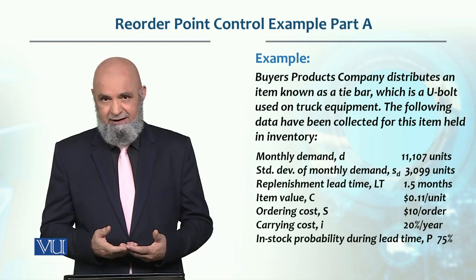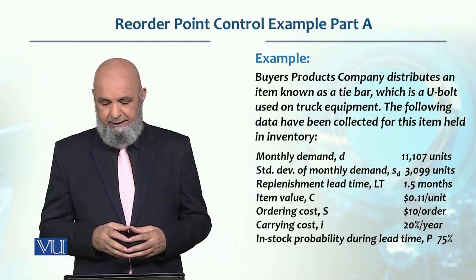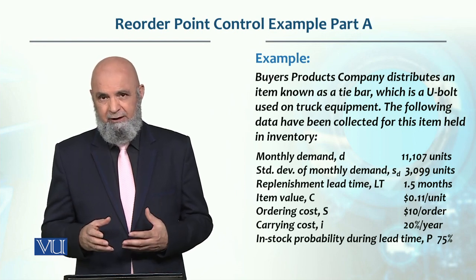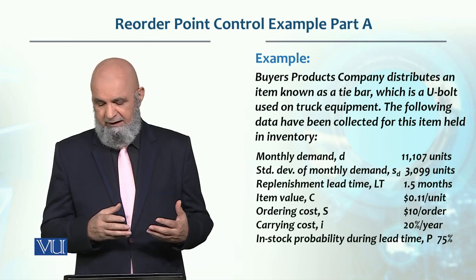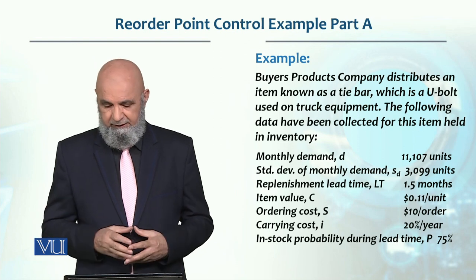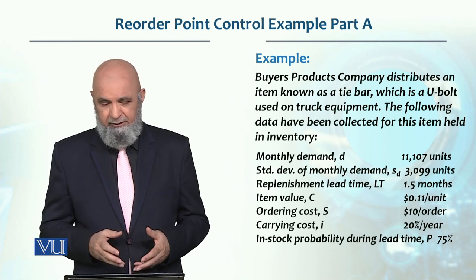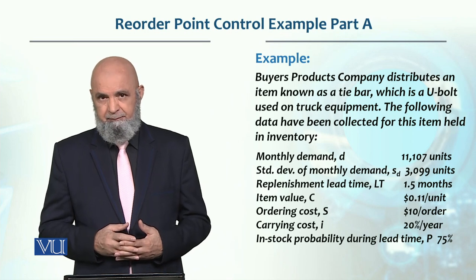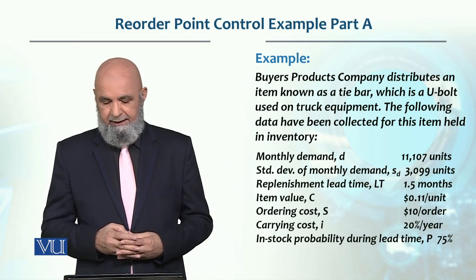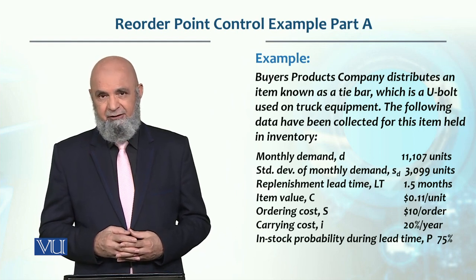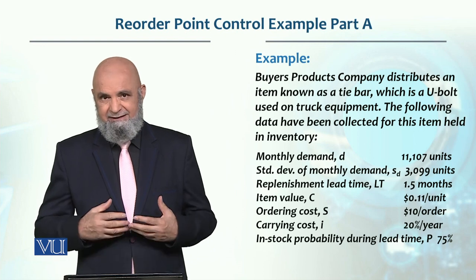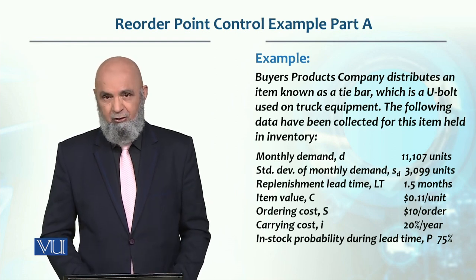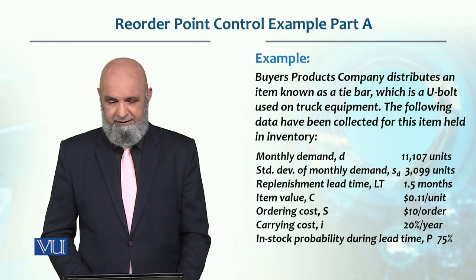Lead time is 1.5 months — if an order is placed in a month, you will receive it after 1.5 months. Item value C is $0.11 per unit, that is 11 cents per unit. Ordering cost is $10 per order, and carrying cost or inventory holding cost is 20% per unit per year. In-stock probability during lead time is 75%, meaning stock will be available to meet demand during lead time.